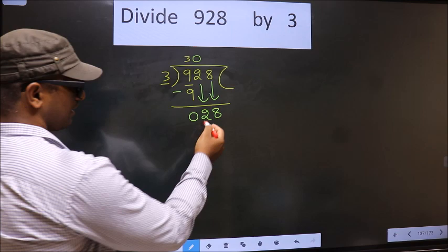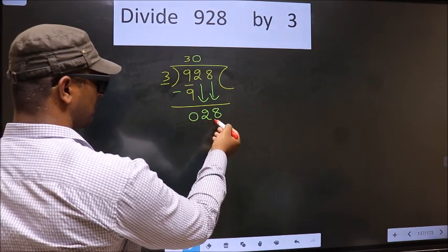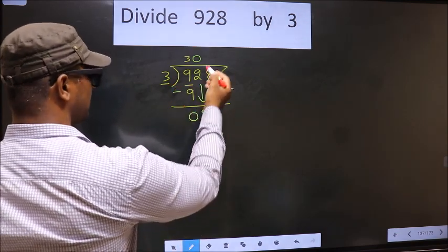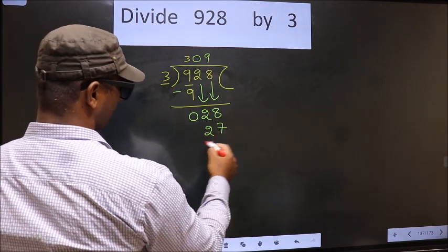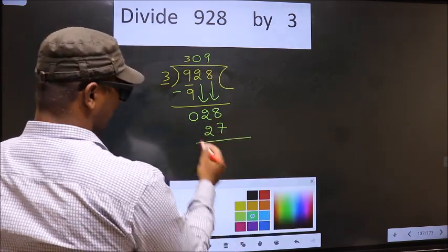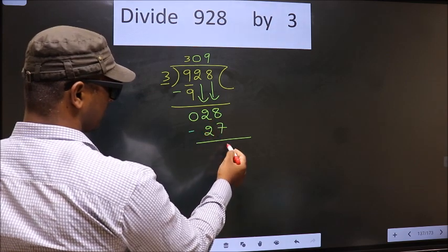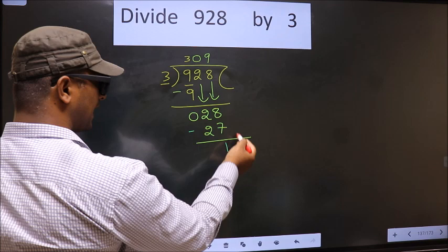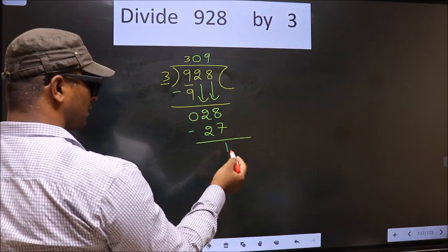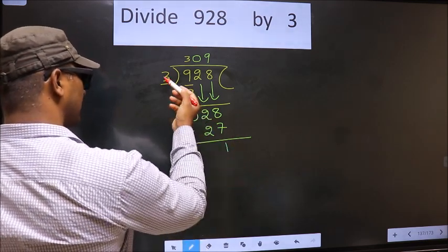Next. 28. A number close to 28 in 3 table is 3 nines, 27. Now you subtract. 28 minus 27 is 1. Over here we did not bring any number down, and 1 is smaller than 3.